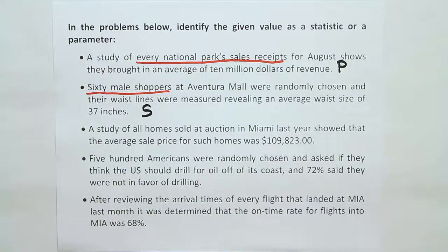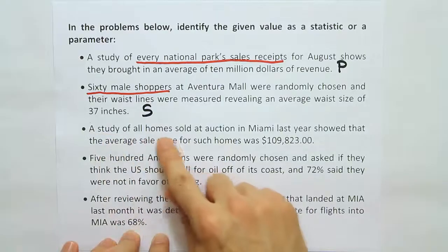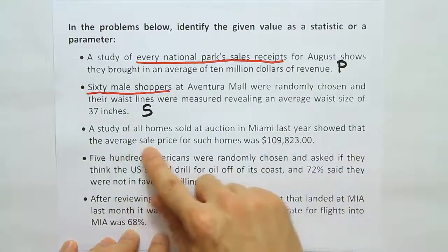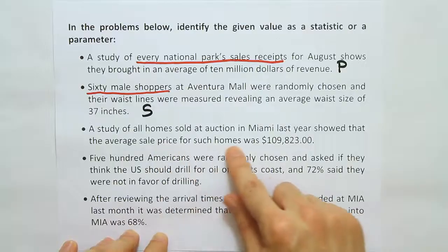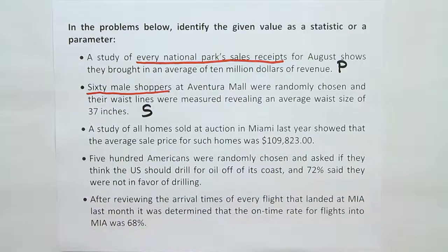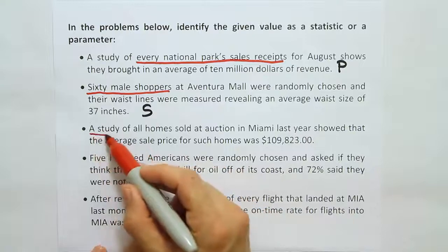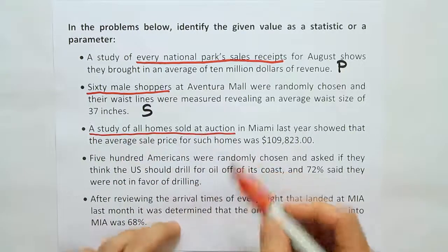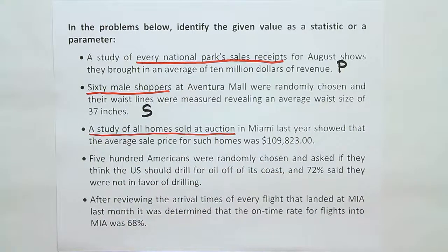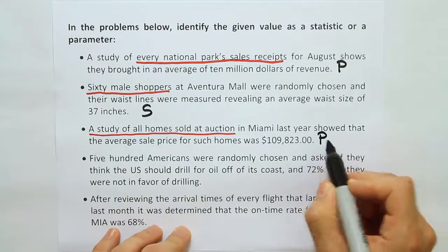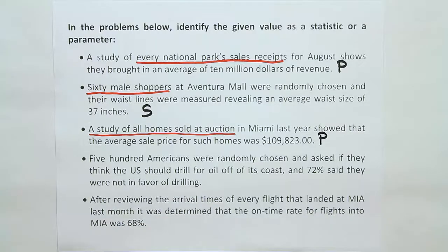The next one says: 'A study of all homes sold at auction in Miami last year showed that the average sale price for such homes was $109,823.' The phrase 'a study of all homes sold at auction' — every home — means it's a census and therefore a population parameter. It comes from the population, so P for parameter.